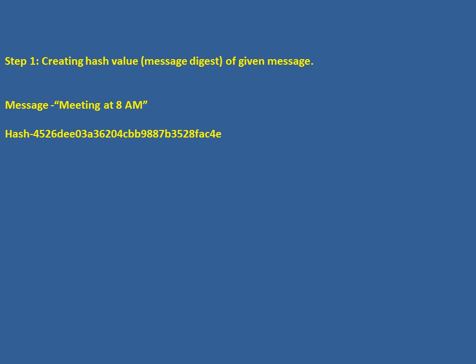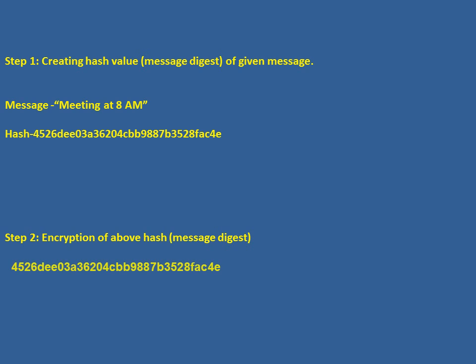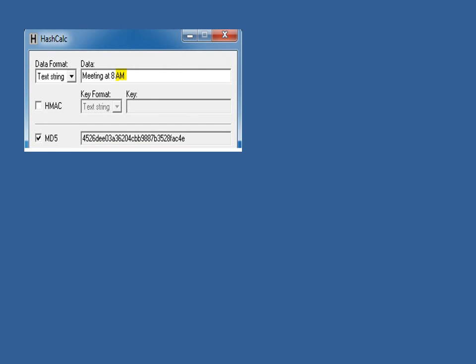Now let us understand step 2. We need to encrypt the hash we arrived at from the above message. This hash is encrypted in such a way that it is not visible to any third party — this is the digital signature. So step 1 creates the hash and step 2 encrypts the hash.